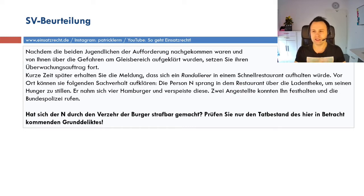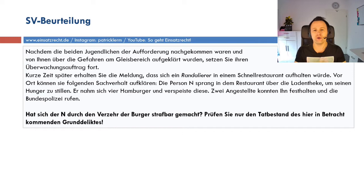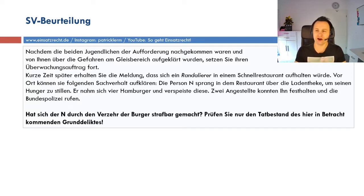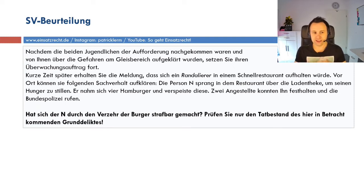Wir starten mit der Sachverhaltsfortsetzung, denn dieser Sachverhalt hat sich ja schon entwickelt. Wir haben die Jugendlichen aufgefordert und sie sind unserer Aufforderung nachgekommen. Was die Rechtsgrundlage war, sehen Sie in Teil 2, den Sie sich am besten vorher anschauen. Wir sind im bahnpolizeilichen Aufgabenbereich, setzen unseren Überwachungsauftrag fort und jetzt kommt eine neue Situation auf uns zu.